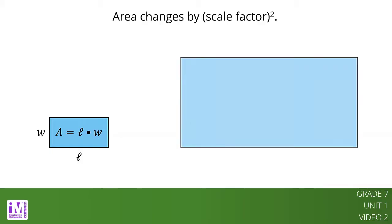If we scale the rectangle by a scale factor of S, we get a rectangle with length L times S and width W times S. The area of the scaled rectangle is L times S times W times S.